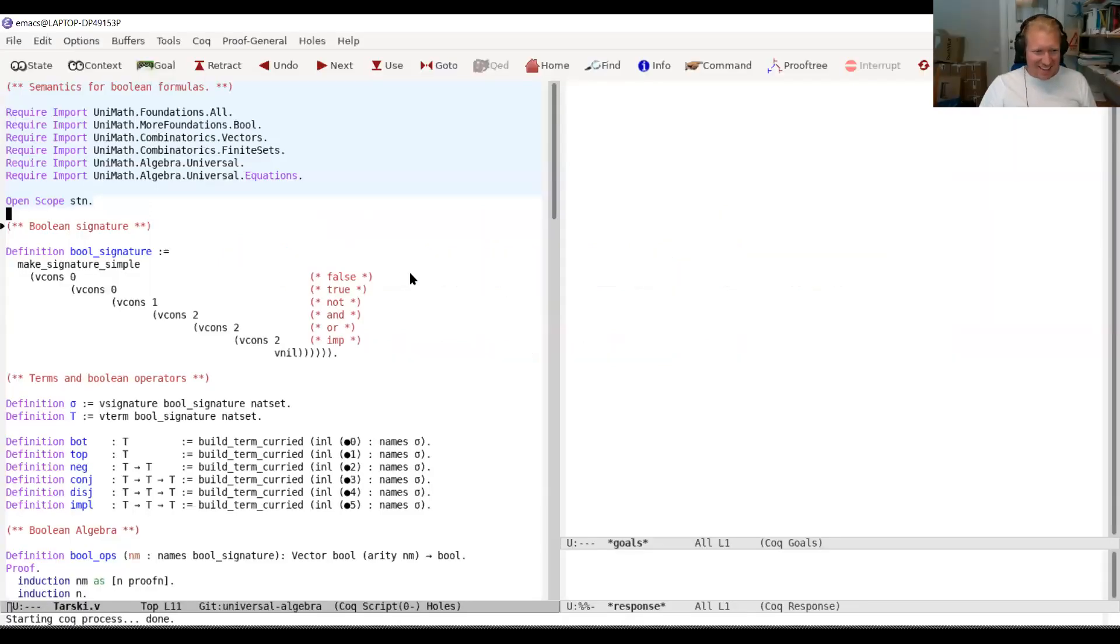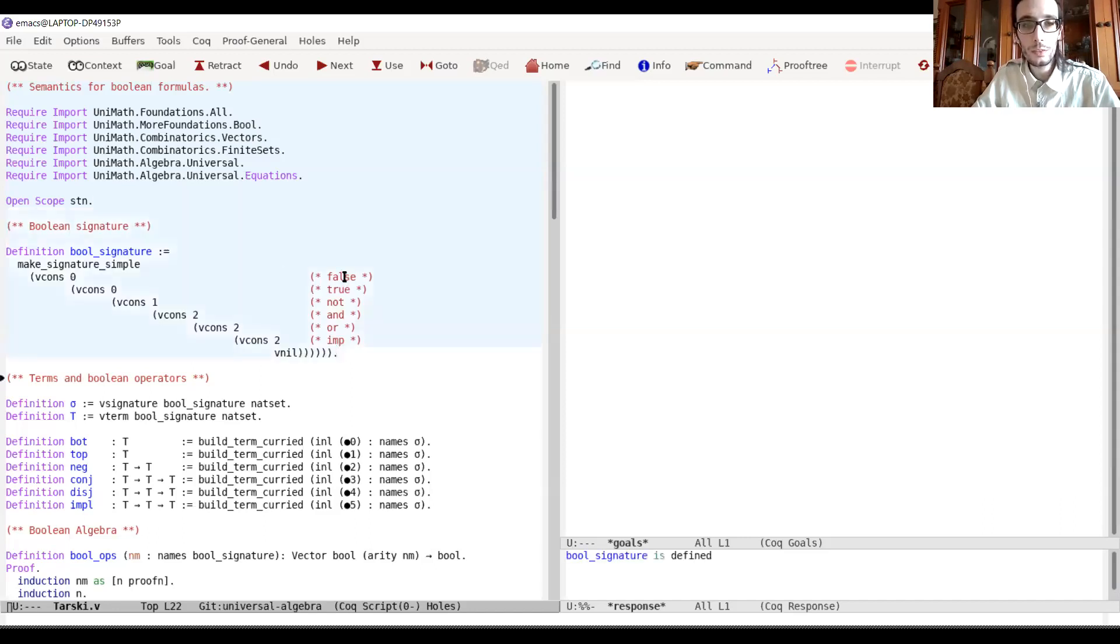Can you see that? Can you see Emacs? Yes. Now, can you see? Okay. Great. So, I imported some files from UniMath and from our own libraries. And now we start with a definition of Boolean Signature. I want to show you that we can define a semantics for propositional formulas. So, we can define a Boolean Signature. And here we have a constant for false, a constant for true, a unary symbol for not, and binary symbols for and, or, and implies. Then we extend this signature with variables that represent propositional atoms.